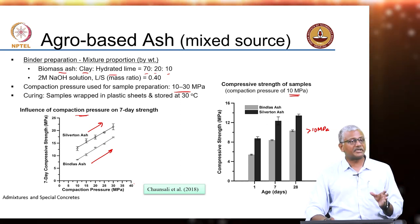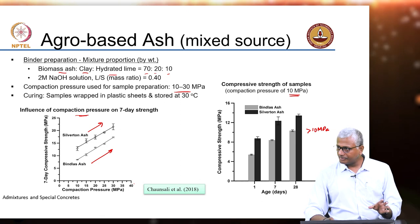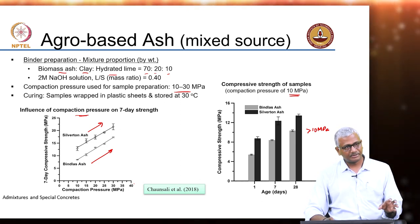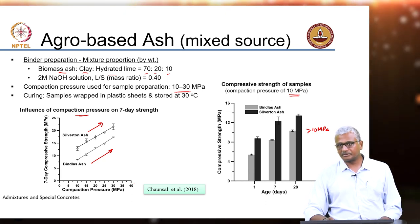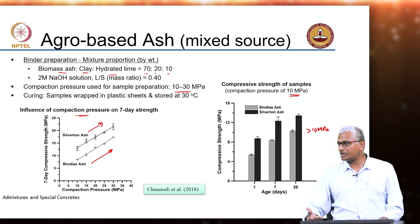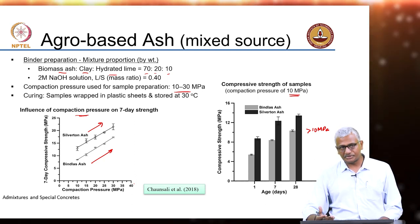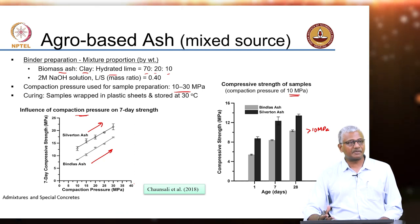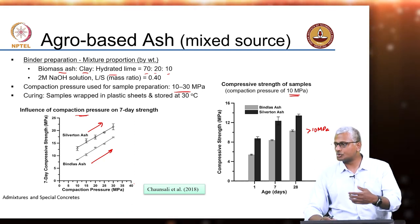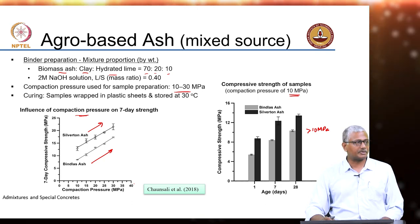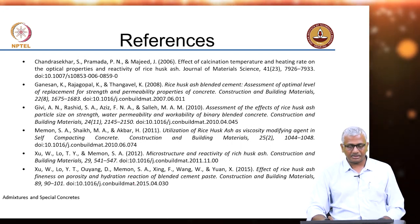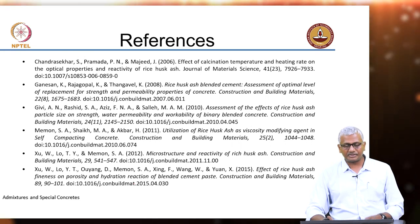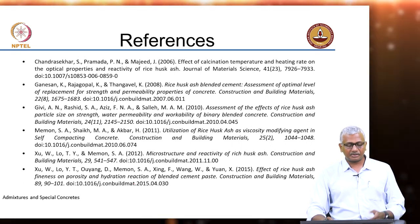Agro-based ashes can be processed near the source of collection right after burning to form construction products like bricks. Or, if in close proximity to a cement plant with a little more processing, they can be used as a replacement for fly ash, in case the thermal power plant is too far away to supply the right quality fly ash to the cement plant. With that we come to a close of this chapter on agricultural ashes, and references from which the examples are given are shown.